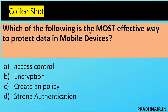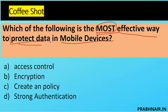Second question: which of the following is the most effective way to protect data on a mobile device? The keyword is 'most' and the scope is to protect data. Option A, access control, is a very high-level word. Encryption makes sense. Creating a policy is more like a directive control. Authentication can be bypassed, so the most effective control is encryption.